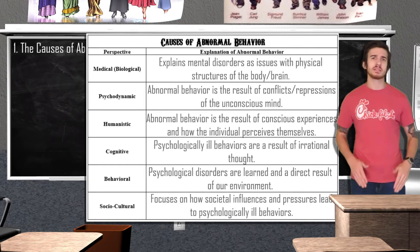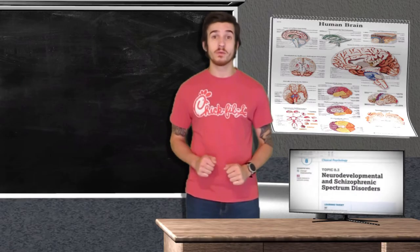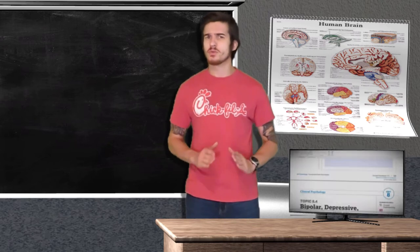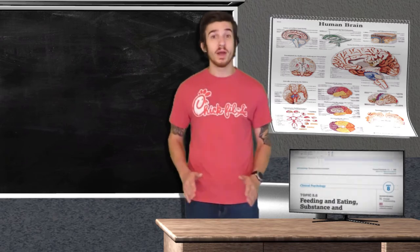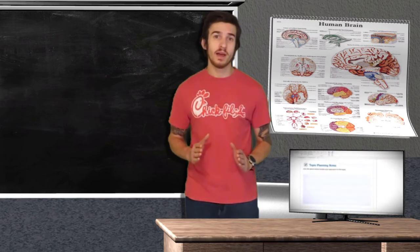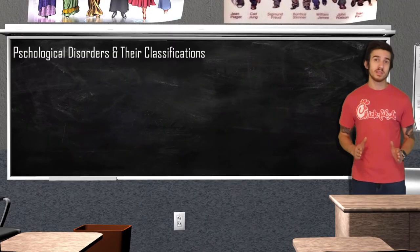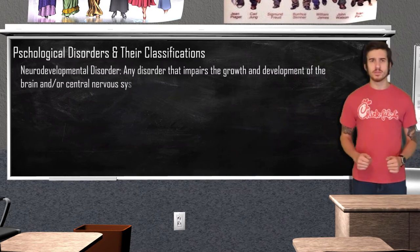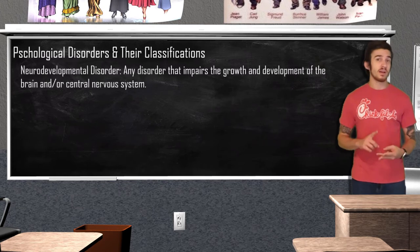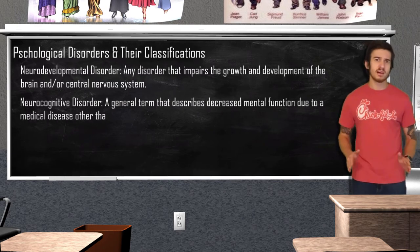Now let's talk about categories of disorders. A neurodevelopmental disorder is any disorder that impairs the growth and development of the brain and/or central nervous system, affecting emotion, learning ability, self-control, and memory. A neurocognitive disorder refers to decreased mental functioning due to a medical disease that is not a psychiatric illness. ADHD is a chronic mental illness including attention difficulty, hyperactivity, and impulsiveness, often beginning in childhood and potentially persisting into adulthood.